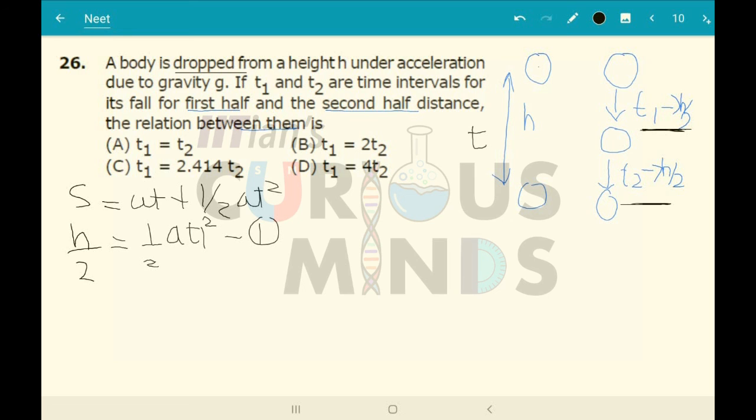In place of s I will substitute h. So h = ut + ½at². When I divide both of them, ½a cancels out, 1/h cancels with h, so ½ = t₁²/t².